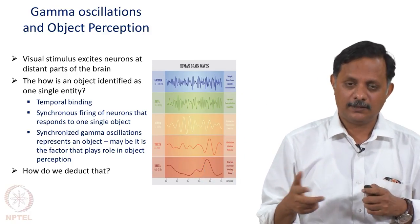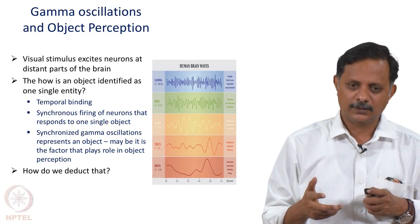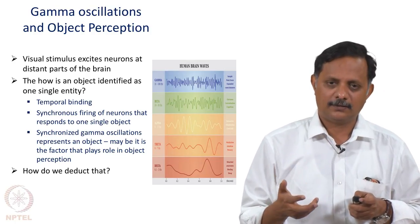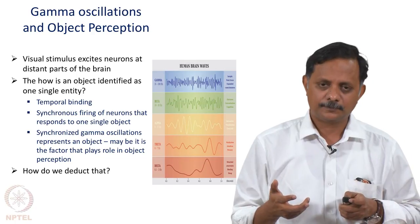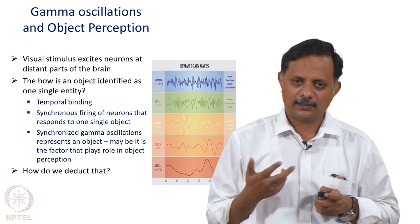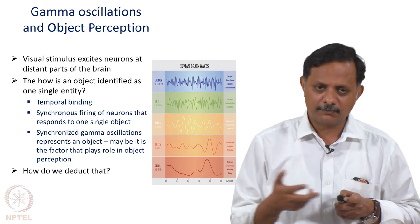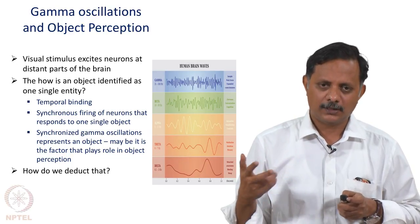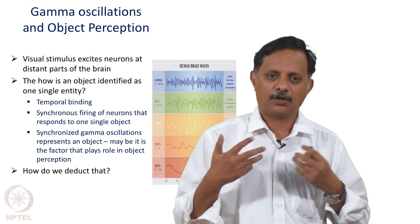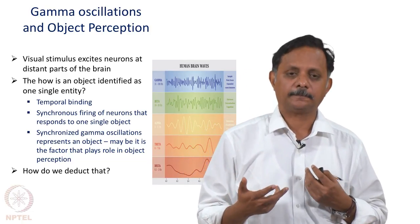Pioneering work on this was done by a German lab — Engel, Gray, Singer, Koenig and others. They performed experiments with cats' visual cortex, presenting a moving bar of a given orientation. Neurons in different parts of the visual cortex that responded to the moving bar all showed synchronization in the gamma band. This was a major discovery supporting the feature binding by synchronization idea, first proposed by Christoph von der Malsburg.